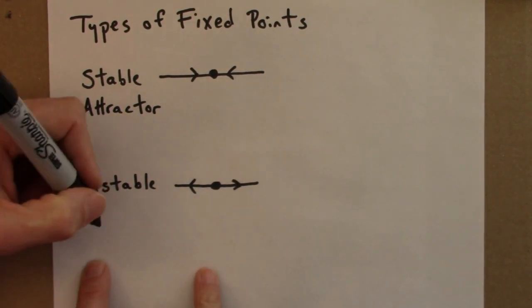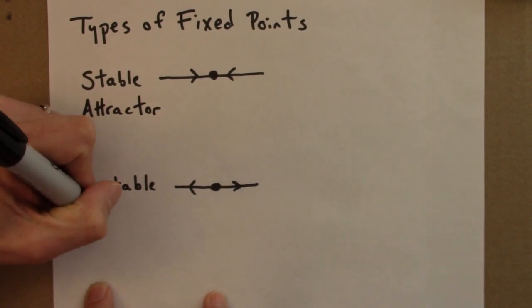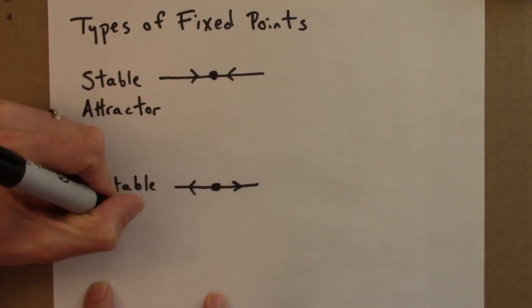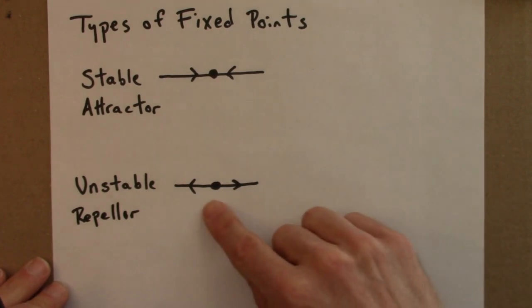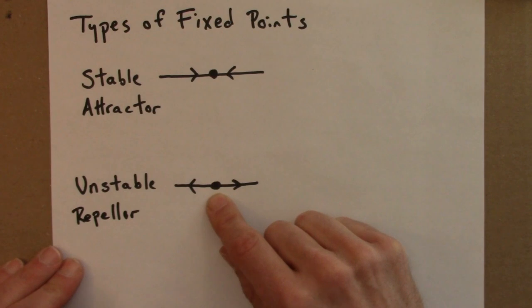An unstable point is called a repeller because it repels nearby points. It pushes them farther away. We would also say that this type of fixed point is repulsive.